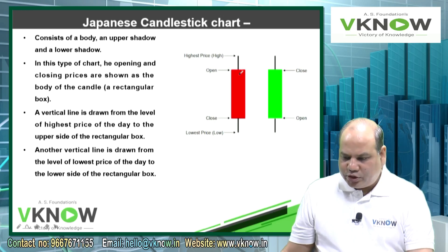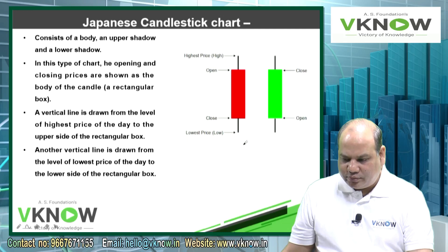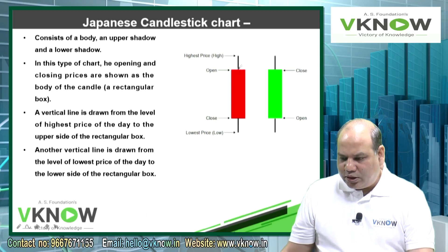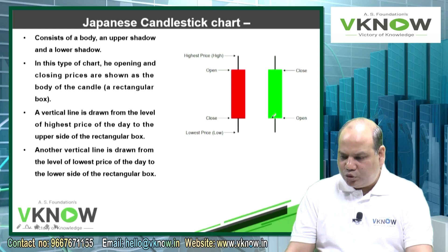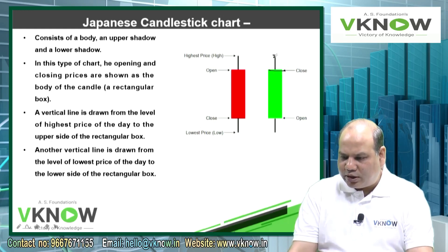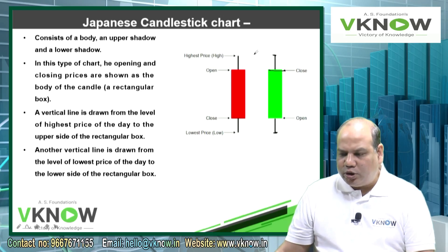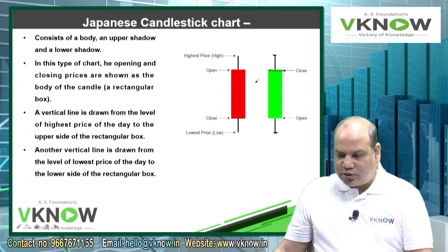The first one, red, indicates that the closing price was lower than the opening price, meaning there was a selling pressure in the market. Market closed below the opening price, so there was a bearish trend in the market, even though for some time the price may have been higher than the opening price, but ultimately it closed below — so bearish trend. Then draw the second one, a green candle, where closing is more, showing a bull trend — price is rising. You can also mark the highest price and lowest price.